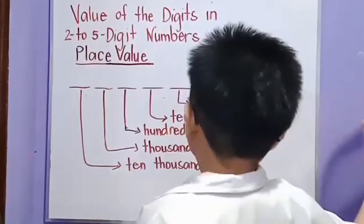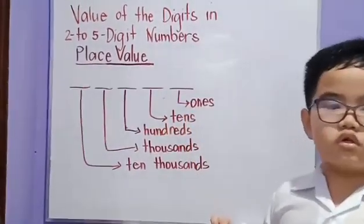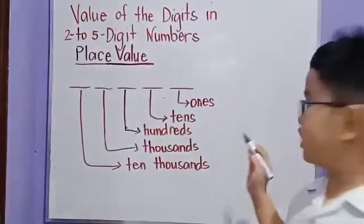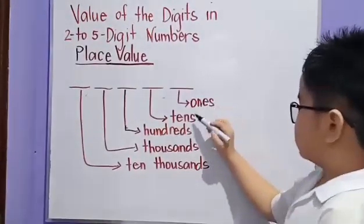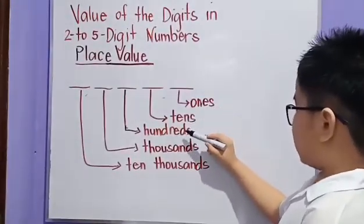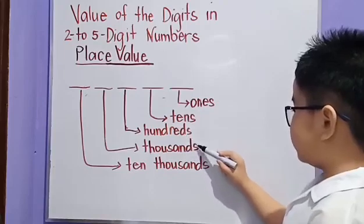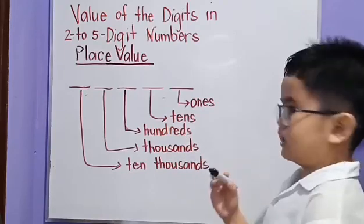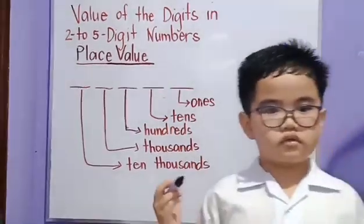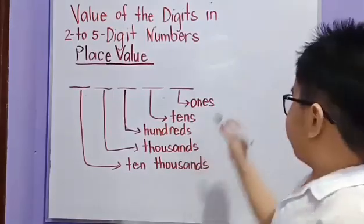So, from the right, the place values of the digits are ones, tens, hundreds, thousands, and ten thousands. We will proceed to value.